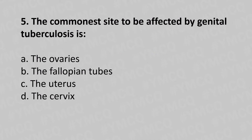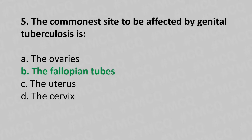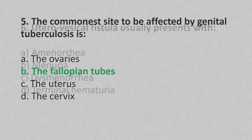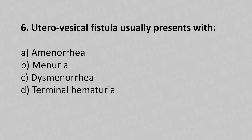Question 5: The common site affected by genital tuberculosis is — option A: the ovaries, option B: the fallopian tubes, option C: the uterus, option D: the cervix. The answer is option B: the fallopian tubes.